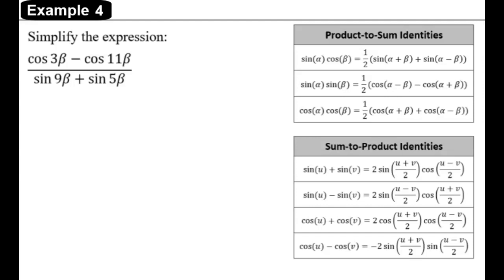Welcome back to example 4 in our notes for product-sum identities. We're going to simplify the expression cosine of 3 beta minus cosine of 11 beta, all divided by sine of 9 beta plus sine of 5 beta.